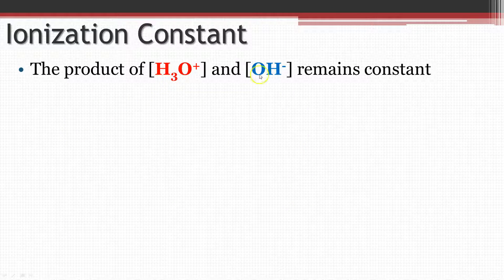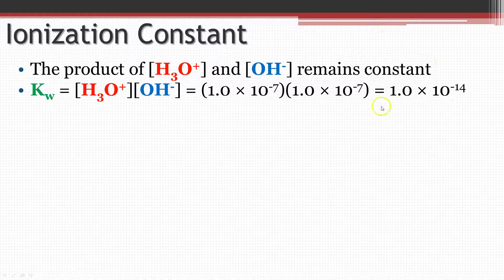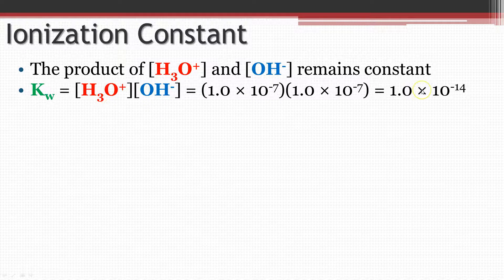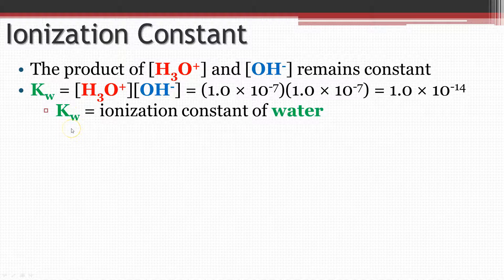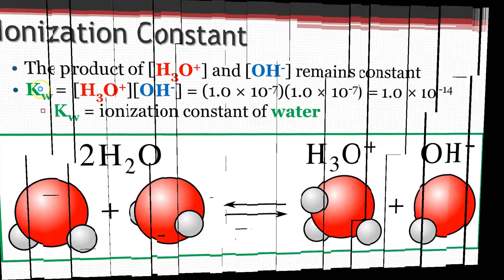The product of the hydronium cation and the hydroxide anion concentrations is always going to remain constant. In pure water it's 1.0 × 10⁻⁷ for either one of them. If you multiply those together, it's always going to be 1.0 × 10⁻¹⁴. This number is a constant — it's not going to change. If the concentration of hydronium were to go up, the hydroxide would go down, and vice versa. But the product will remain constant. We call this the ionization constant of water — Kw = 1.0 × 10⁻¹⁴.